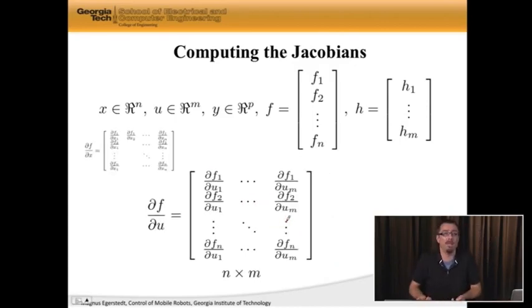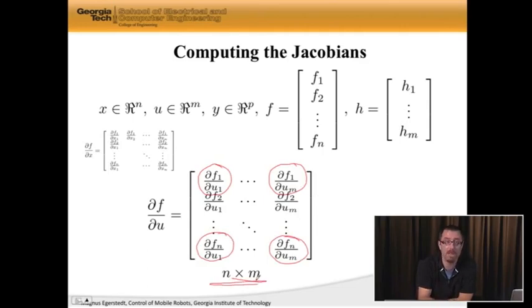Well, similarly, B is df/du. And again, the first component is df_1/du_1. This component is df_1/du_m. Here we have df_n/du_1, all the way to df_n/du_m. So this is an n by m matrix, which is what we needed. And in fact, this is the B matrix, so it has the right dimension.